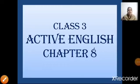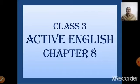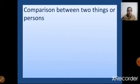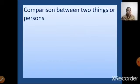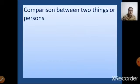Sairam children. Today we will begin our session with Active English, Chapter 8 — comparison between two things or persons. You all have done this in your previous classes; this is just a continuation of that. So we will have a quick recap of what we have done earlier, followed by our exercises.